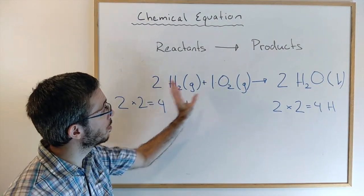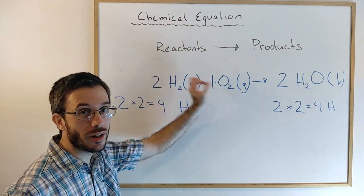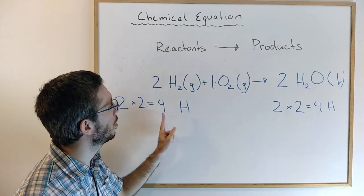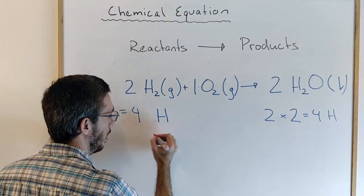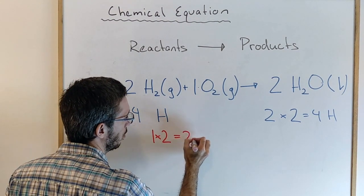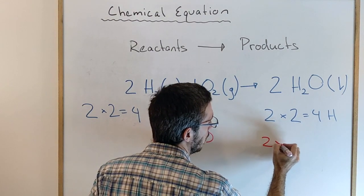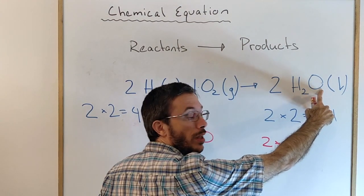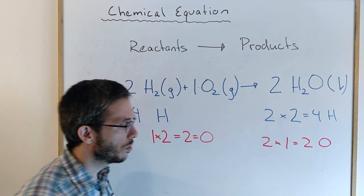So you have the same amount of atoms of each element on the left and on the right. Again, this is true for a chemical reaction. In a nuclear reaction, you can actually change the element. If you look for oxygen, I have 1 times 2 atoms of oxygen, so a total of 2 on the left. And I have 2 times 1. If I write nothing here, that means 1 equals 2 oxygen atoms on the right.